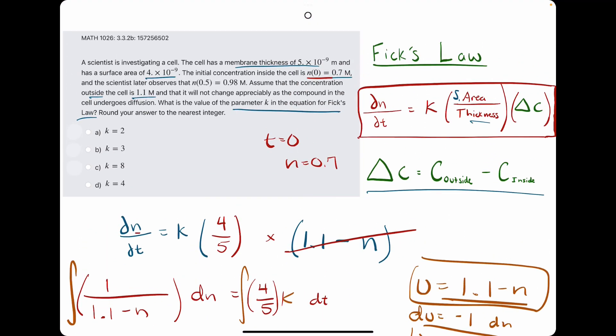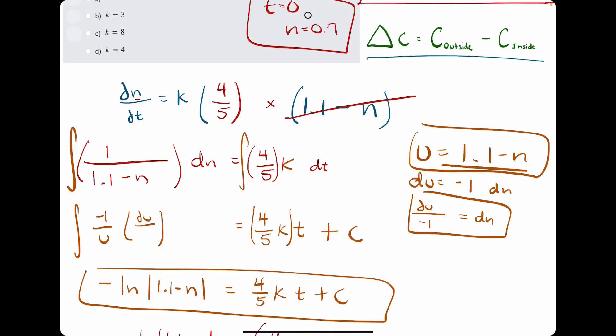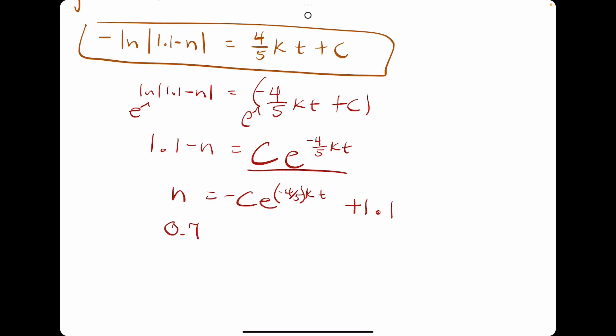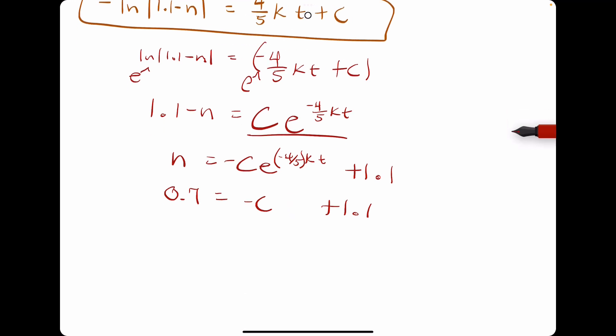Now let's evaluate our initial value problem. We have t equals 0, n equals 0.7. So when n equals 0.7, we have negative c e to the negative 4 fifths k times 0. So this whole exponent times 0 will just go to 0. e to the 0 is just 1. So negative c times 1 is just negative c. We want to solve for c. So I'll subtract 1.1. We get negative 0.4 equals negative c. And we divide by a negative 1 to get c is 0.4.